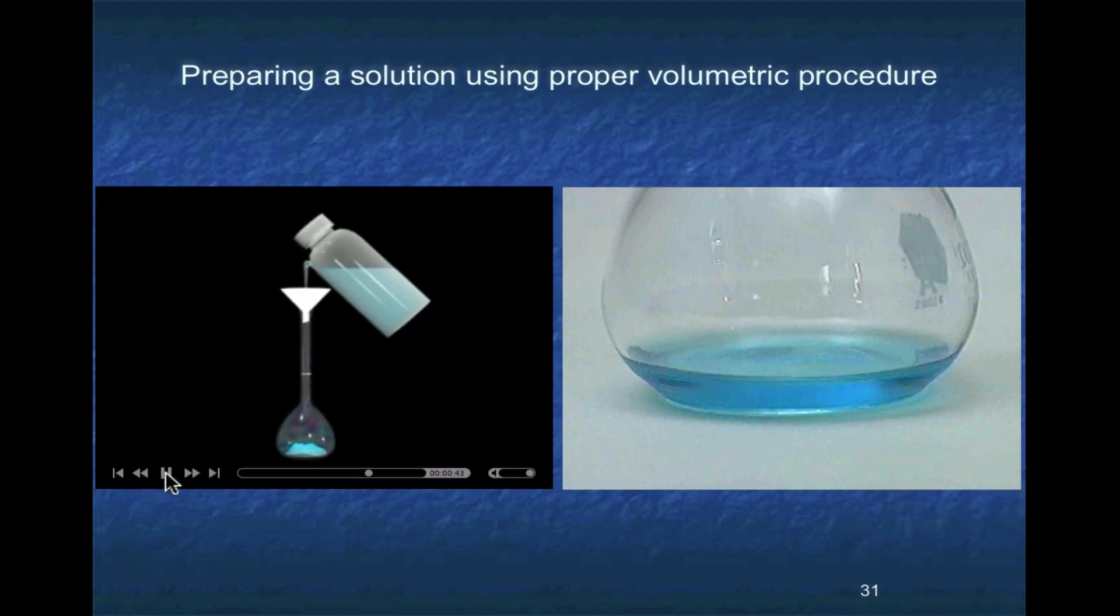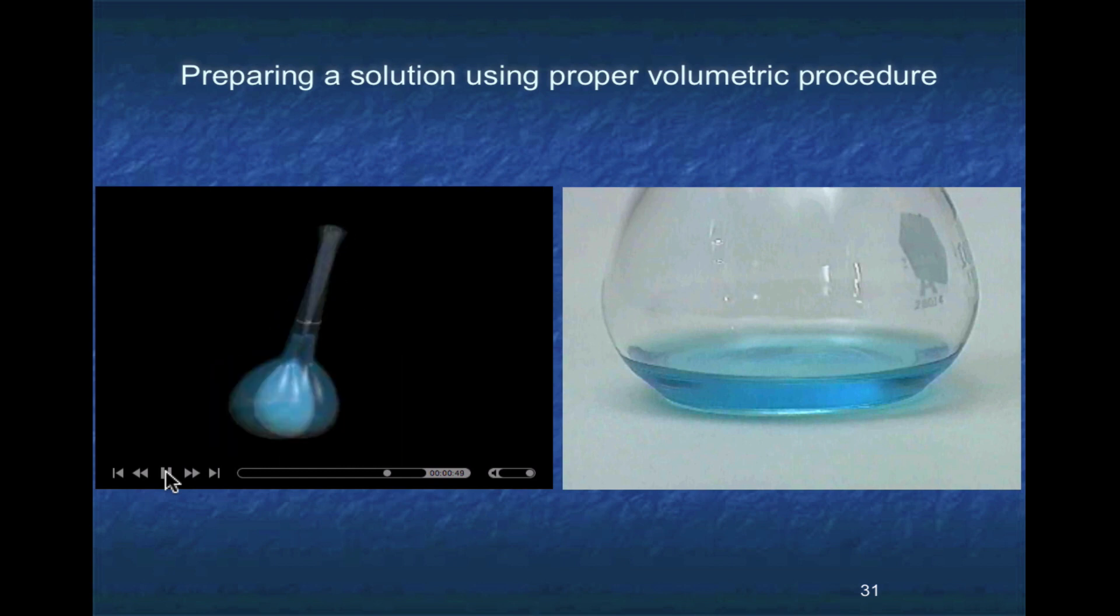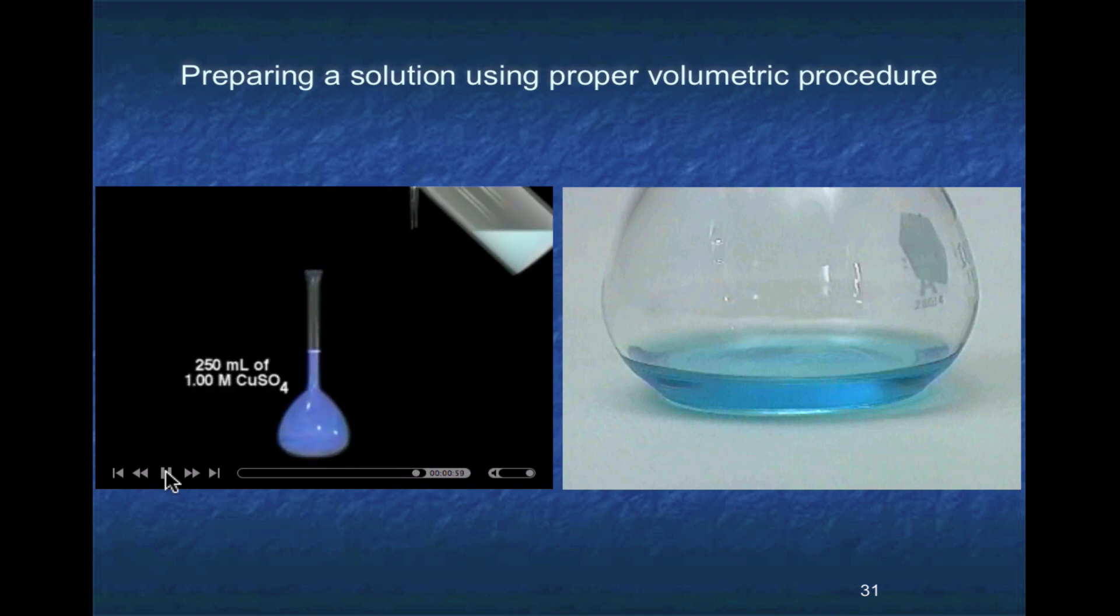Next, transfer the copper sulfate completely to a 250 milliliter volumetric flask. Water is added and the flask swirled to dissolve the solid. Finally, water is added to bring the total volume in the flask to exactly 250 milliliters.